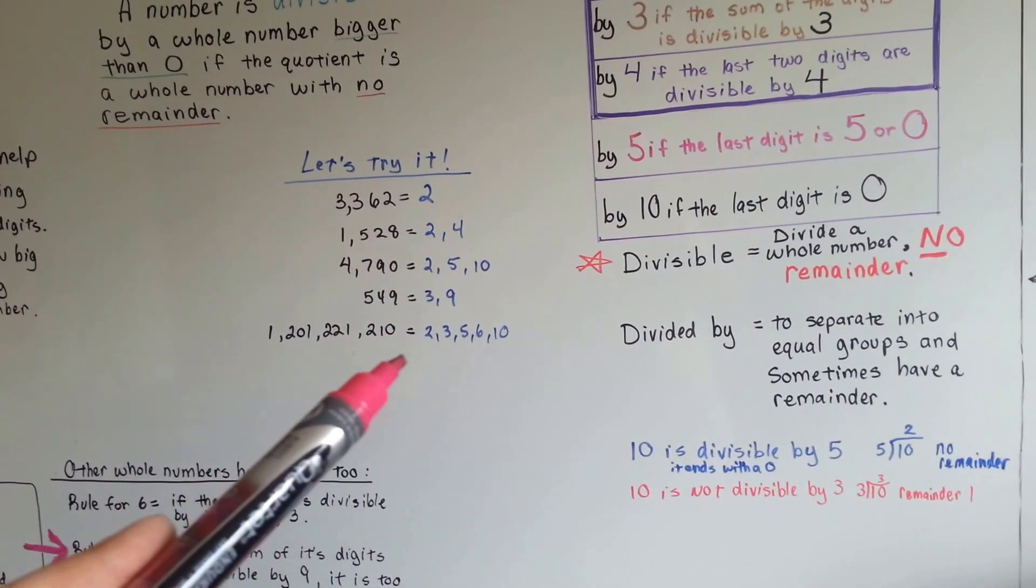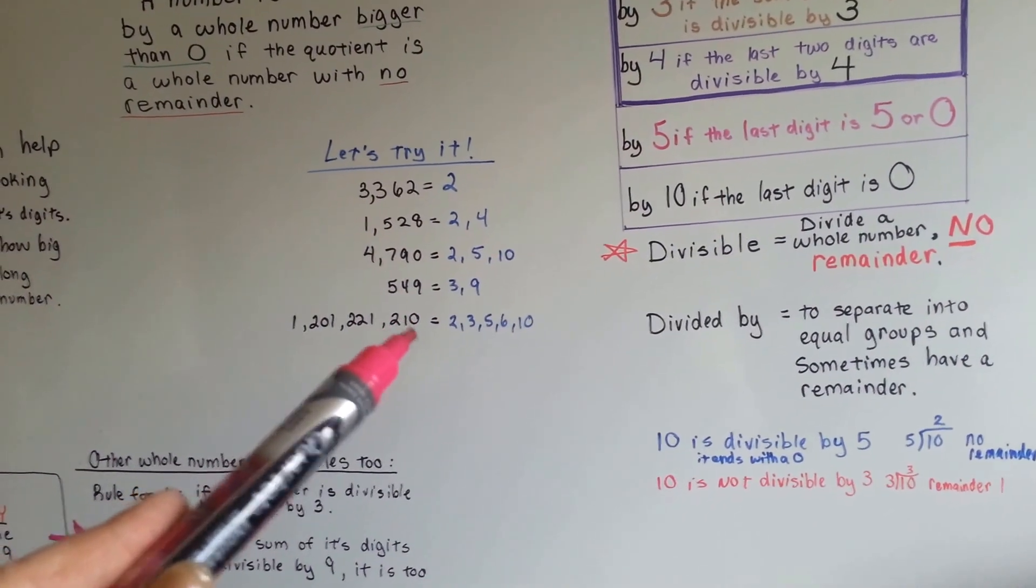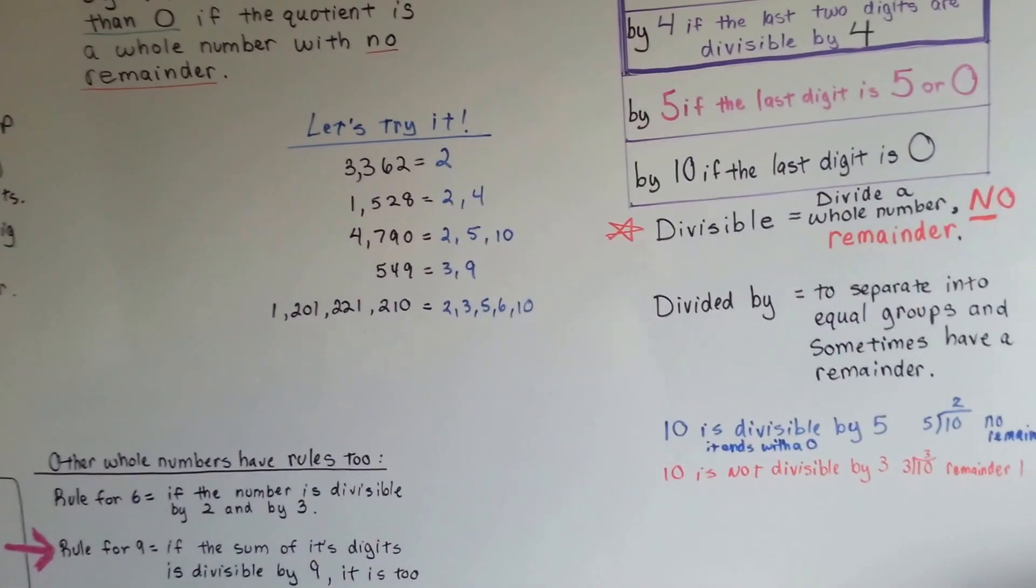It ends with a 0, so 5 works. It's divisible by 2 and 3, so 6 works. And it ends with a 0, so 10 works. See? And it doesn't matter how big the number is, we can apply this rule.